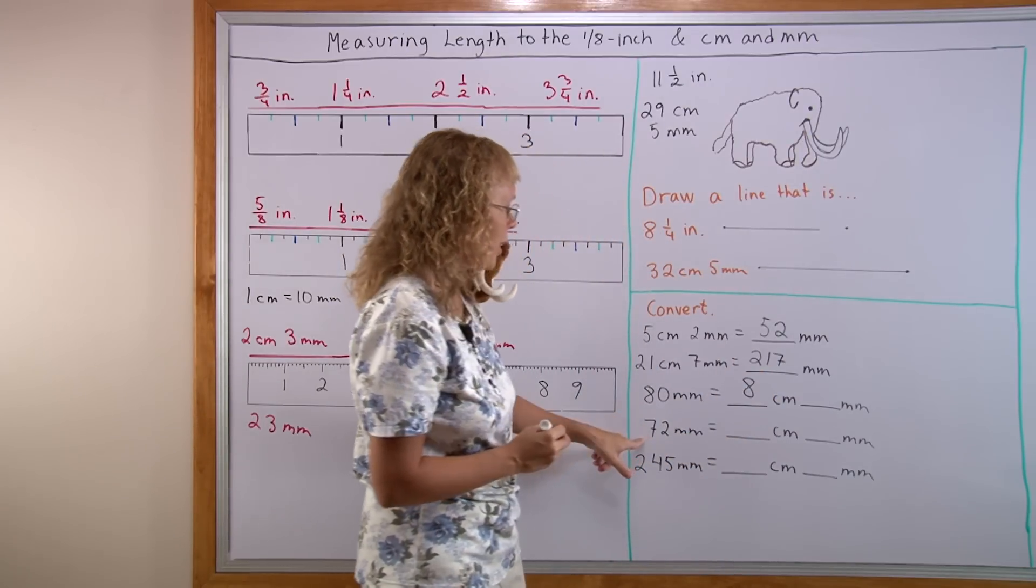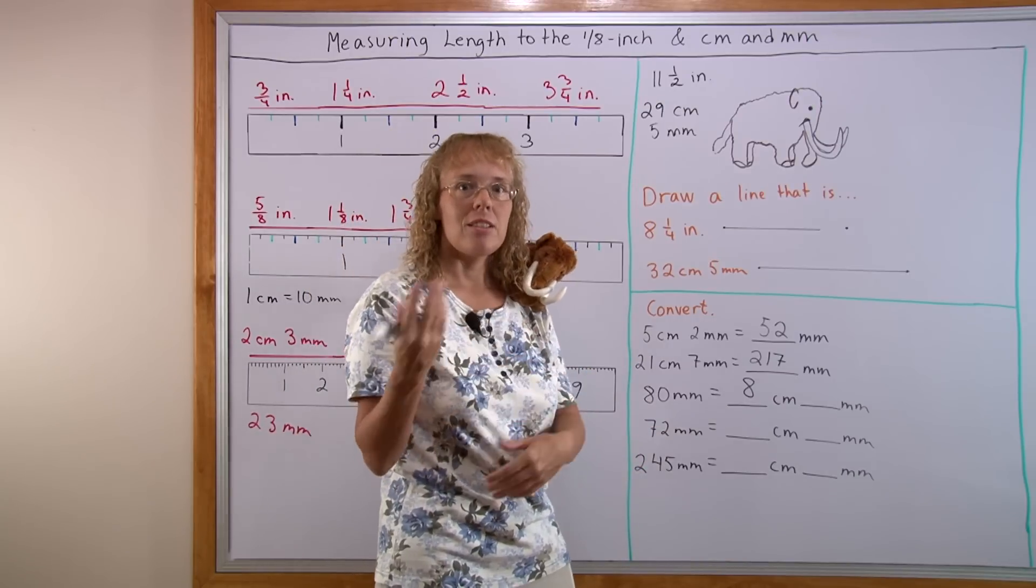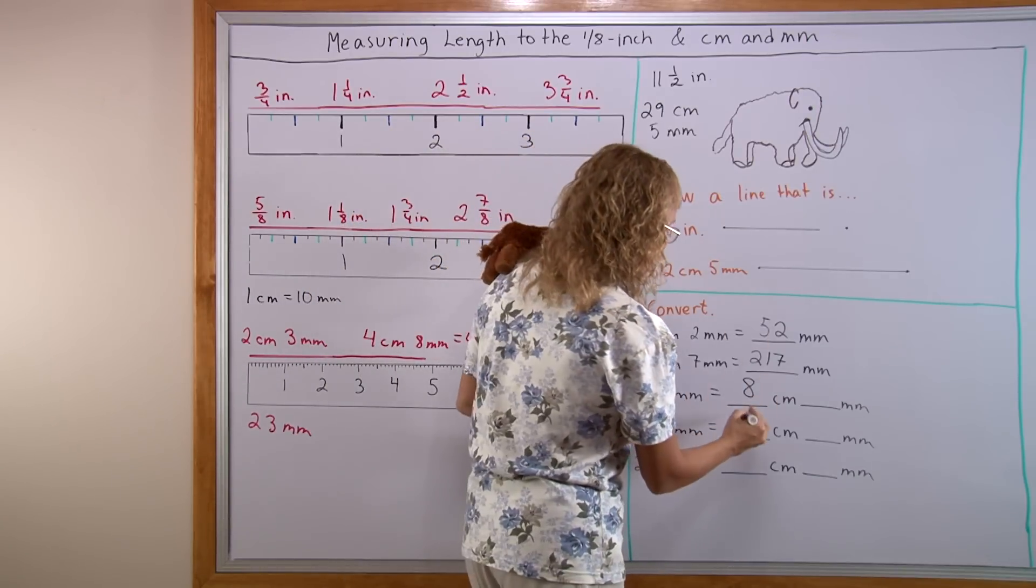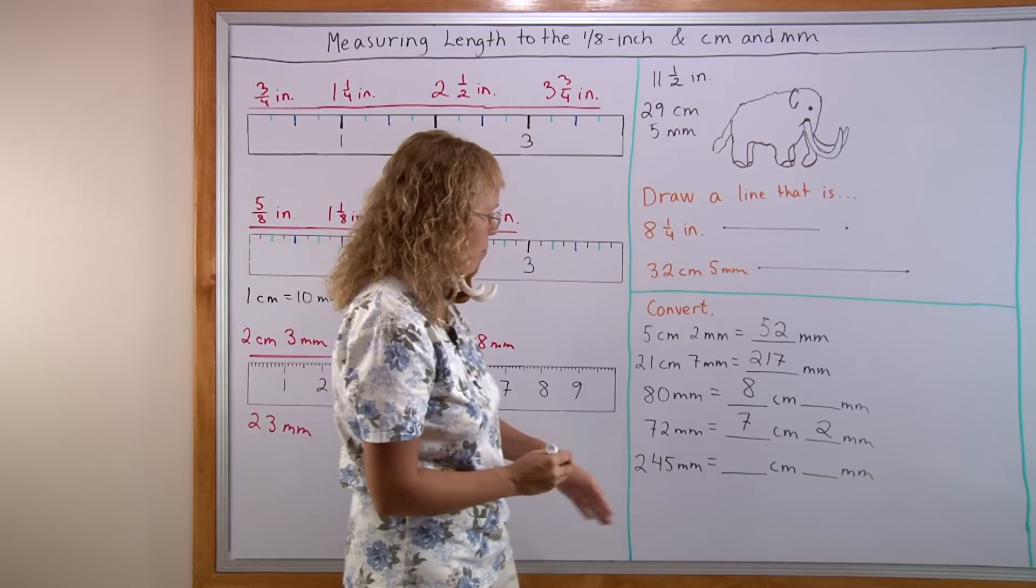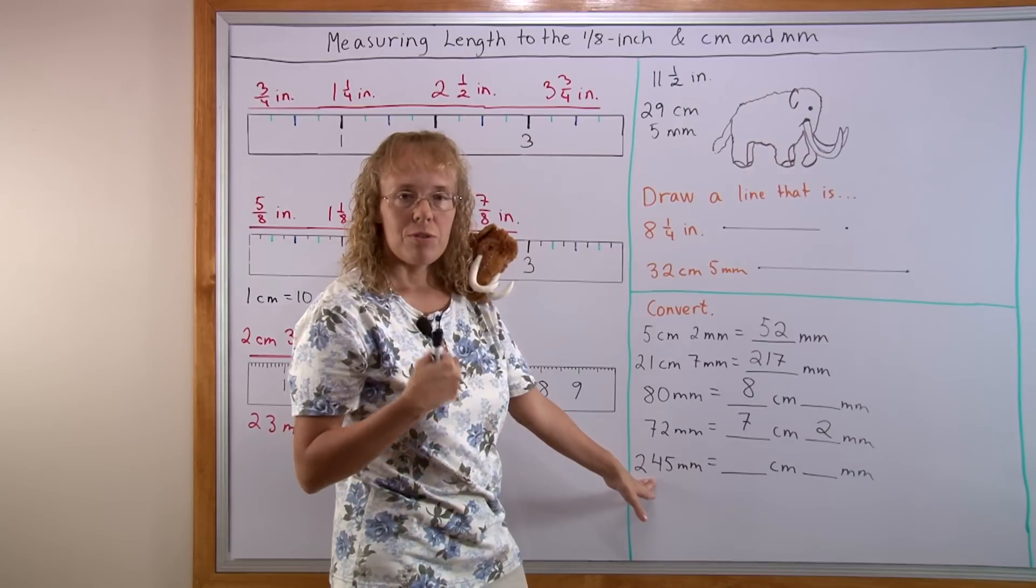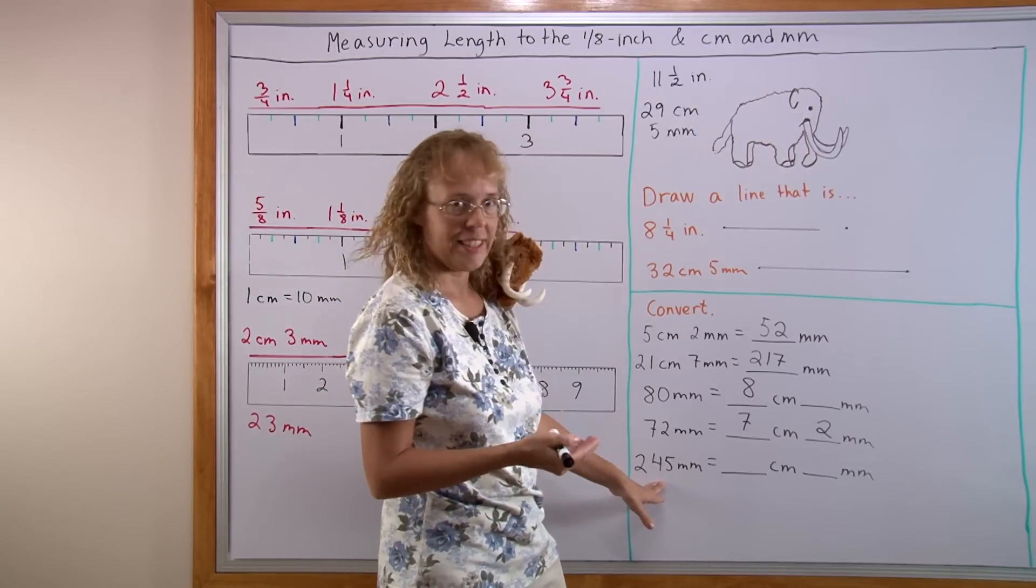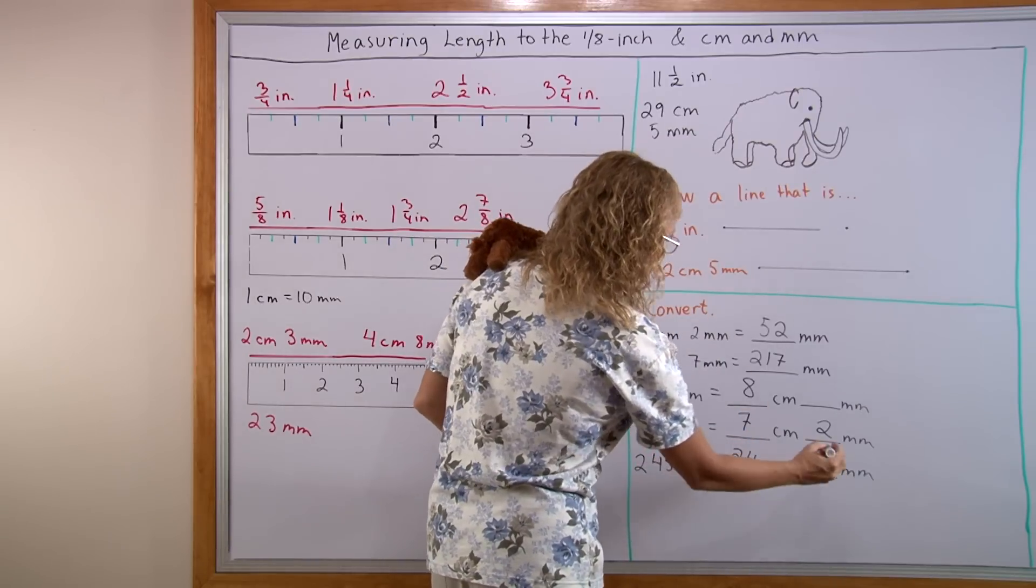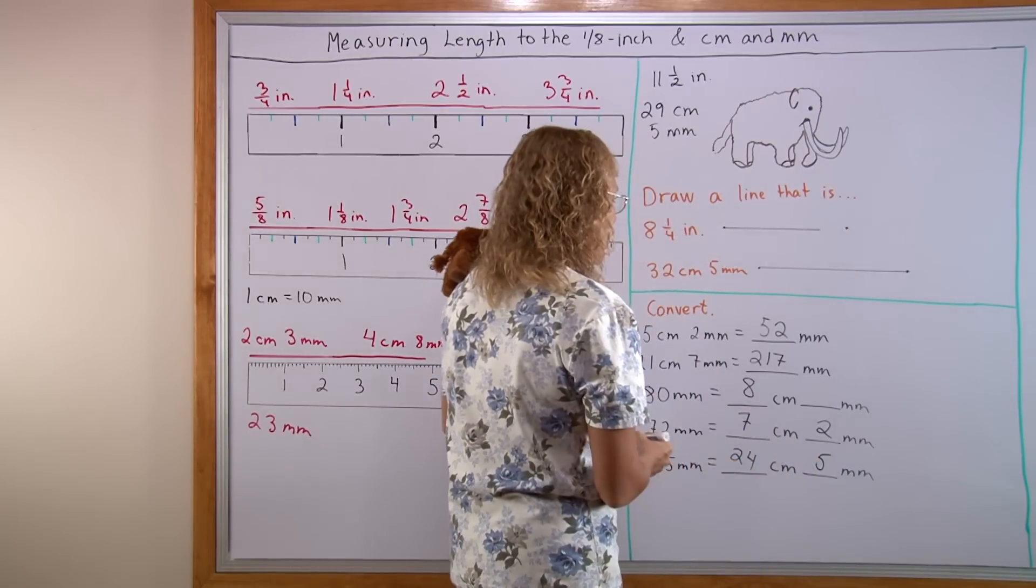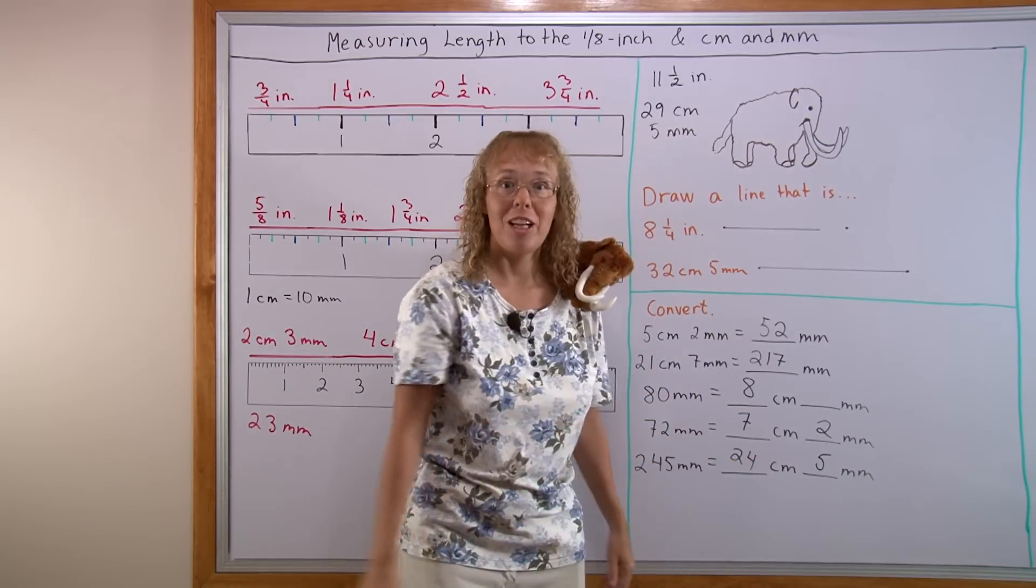And then 72 millimeters. Well, 70 millimeters is exactly 7 centimeters. And then the 2 millimeters are left over. And similarly here, 245 millimeters. 240 millimeters is exactly 24 centimeters. And here's 5 millimeters. I hope that is easy. I hope this video was also helpful.